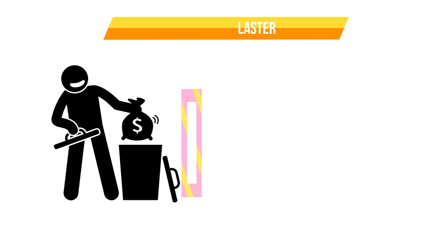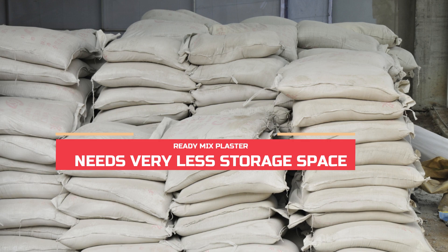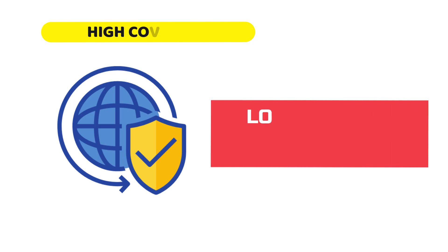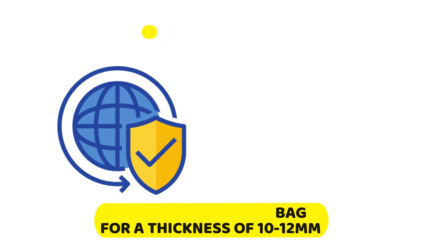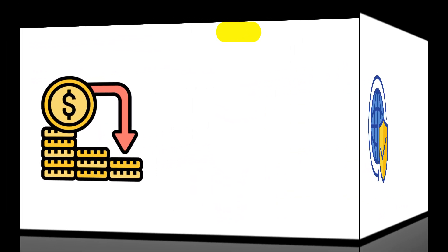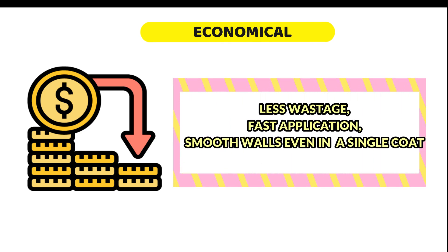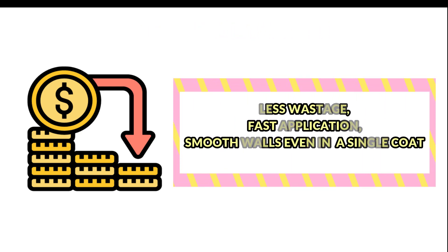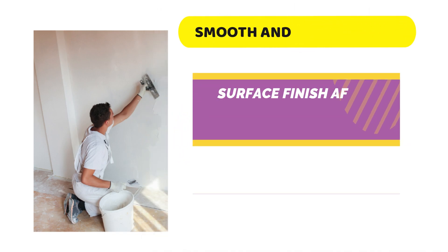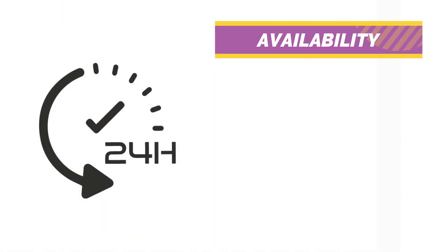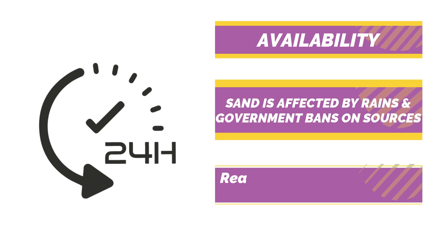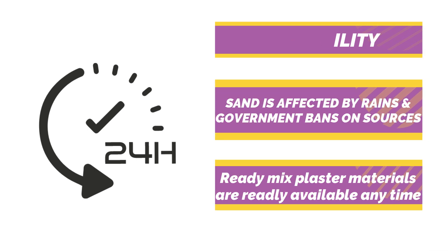Ready mix plaster requires very less storage space and has very good coverage because of its low density and high volume — 15 to 20 square feet for a 40 kg bag at a thickness of 10 to 12 mm. They are very economical because of less wastage, fast application and smooth finish. The surface finish after application is excellent, giving a very durable finish. Sand is affected by rains and government bans on sources, but ready mix material is available round the clock.